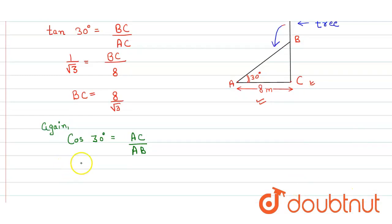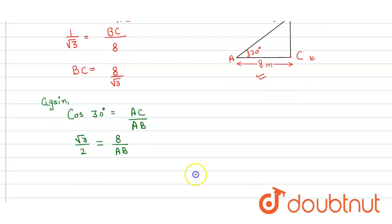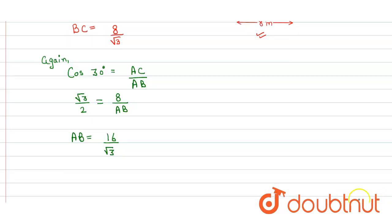Here, cos 30 degrees is equal to root 3 upon 2, which equals AC, which is 8, upon AB. So here we get the value of AB is equal to 16 upon root 3.